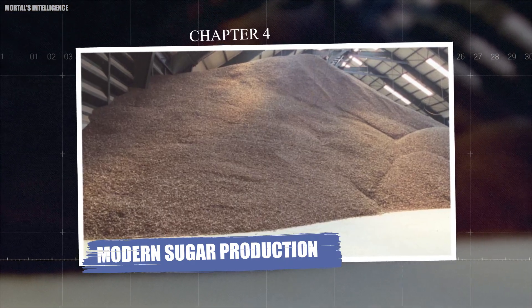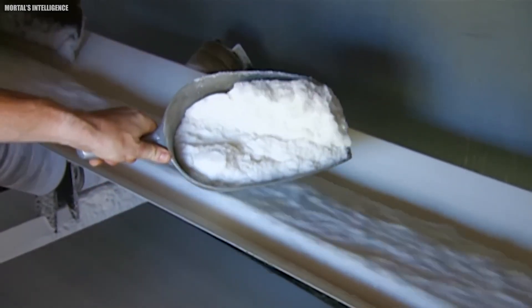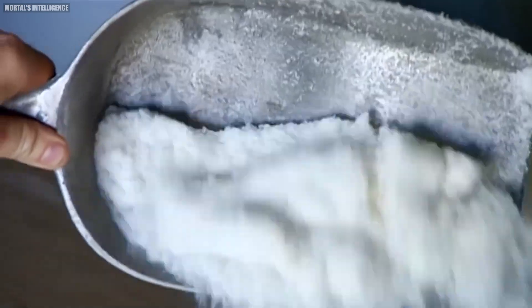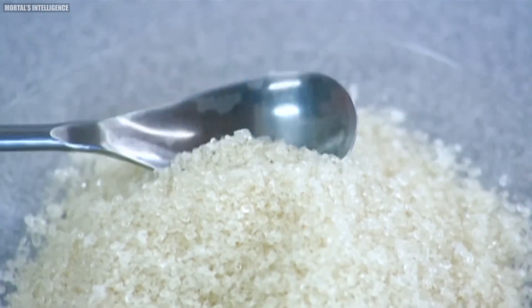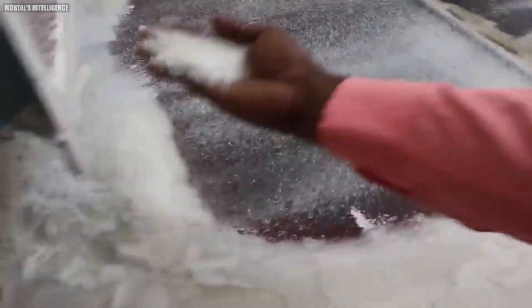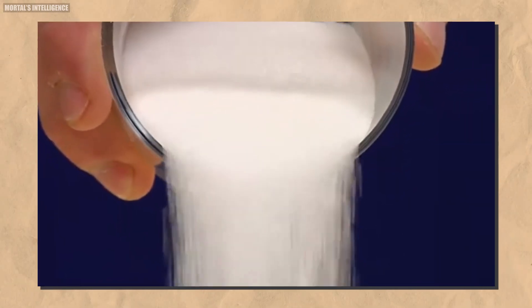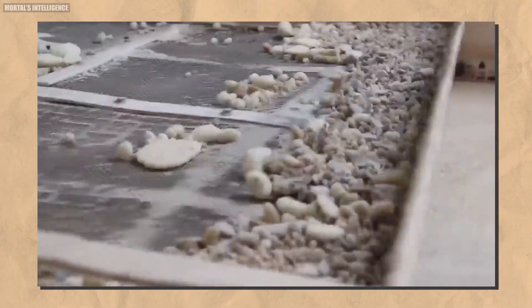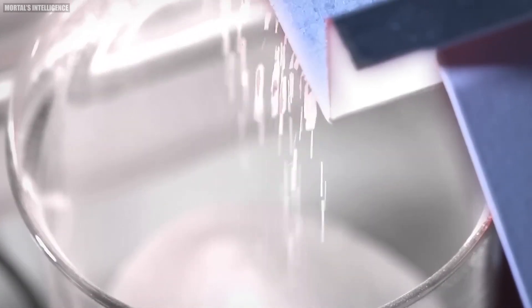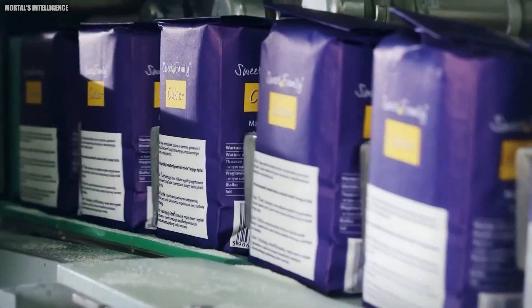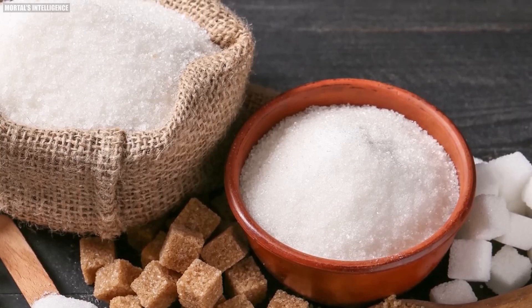Chapter 4: Drying and Packaging. Once the sugar crystals are separated, they undergo a thorough washing process to eliminate any remaining molasses. This washing is crucial to ensure the purity of the sugar. Following this, the crystals are dried to remove all moisture, a step that is essential for maintaining the quality and longevity of the sugar. After drying, the sugar crystals are meticulously sorted by size and color. This sorting ensures uniformity and quality in the final product. The sorted sugar is then carefully packaged for distribution, ready to be delivered to consumers and businesses.